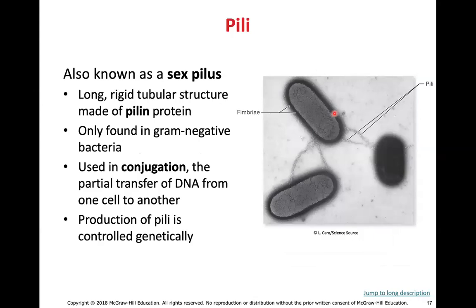The pilus is a little different. Pili, also known as sex pili, are tubular channels from one cell to another. What happens is a plasmid — a piece of DNA — in one cell gets transferred to another cell through a sex pilus, so they can share what's called plasmid DNA. The DNA replicates and a copy travels through the sex pilus to the receiving cell.